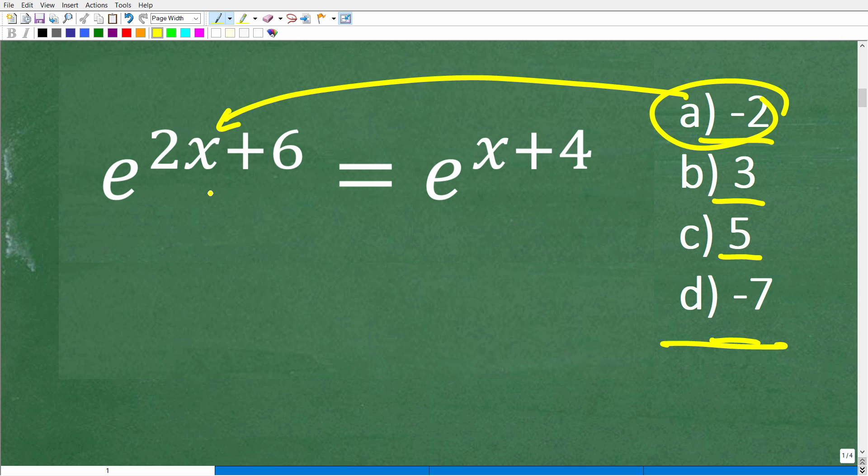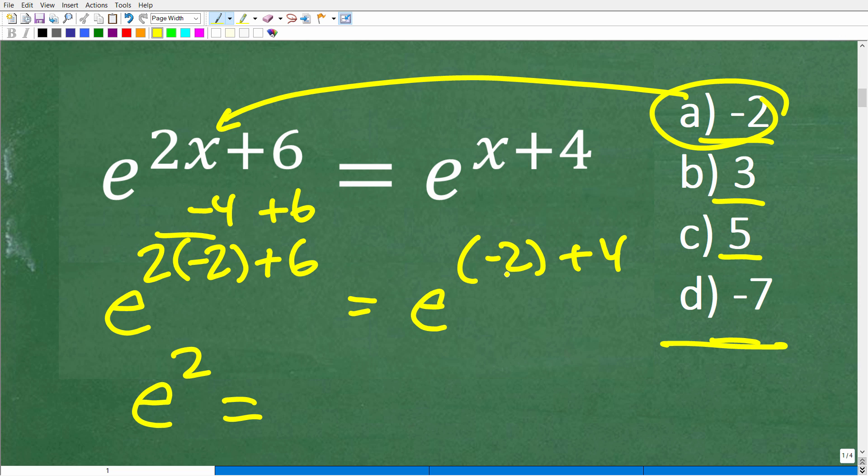When we plug in negative 2 right here, you'll see that this works out. So let's just do this real quick. E to the 2 times negative 2 plus 6 is equal to E to the negative 2 plus 4. This is going to give me E to the, well, negative 2 times 2 is negative 4 plus 6. So negative 4 plus 6 is 2, and that's equal to negative 2 plus 4, that's a positive 2 as well. So E squared over here. Negative 2 makes the left-hand side equal to the right-hand side. So by definition, this is the correct solution.